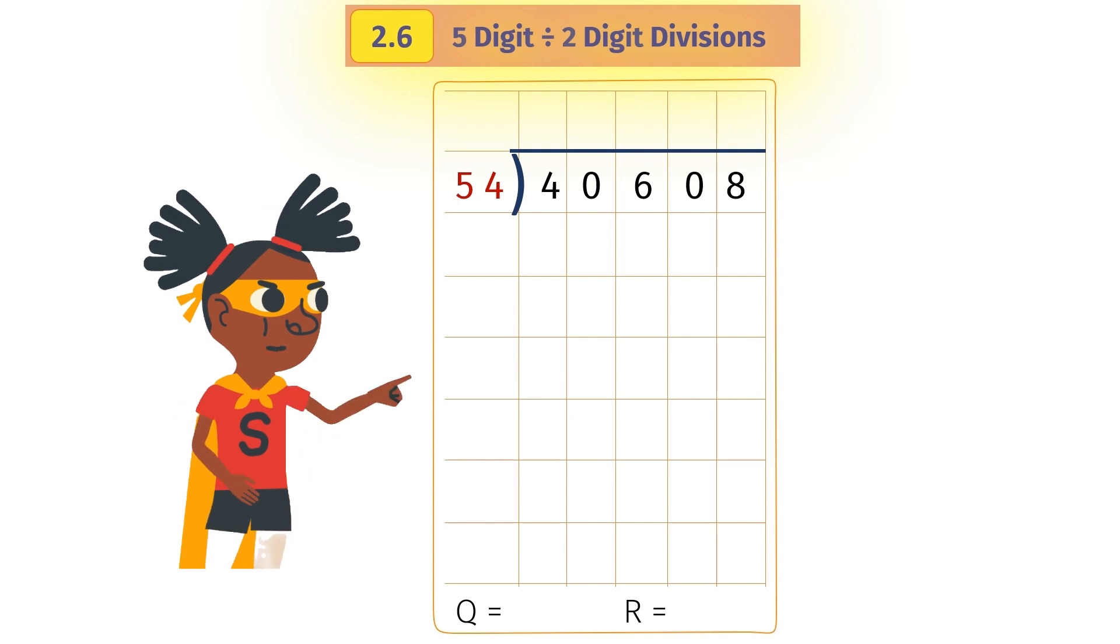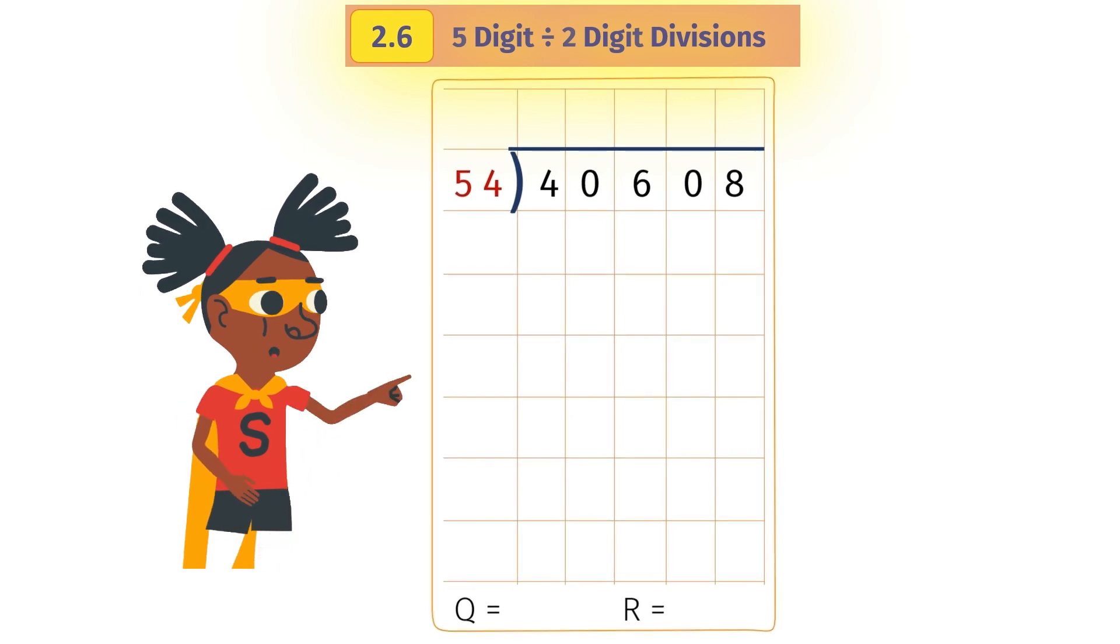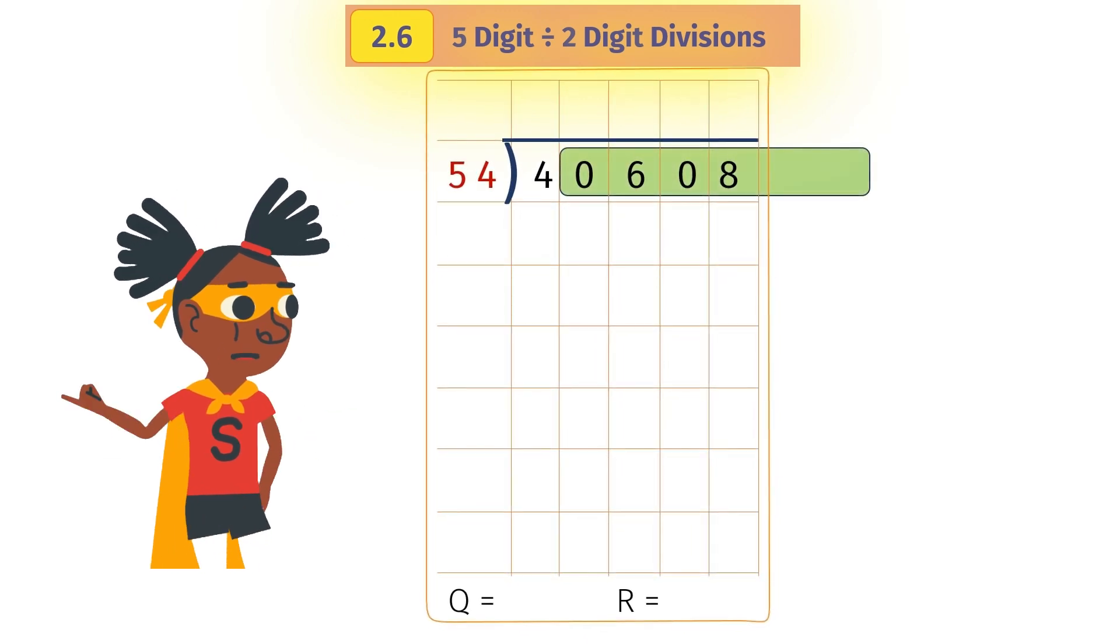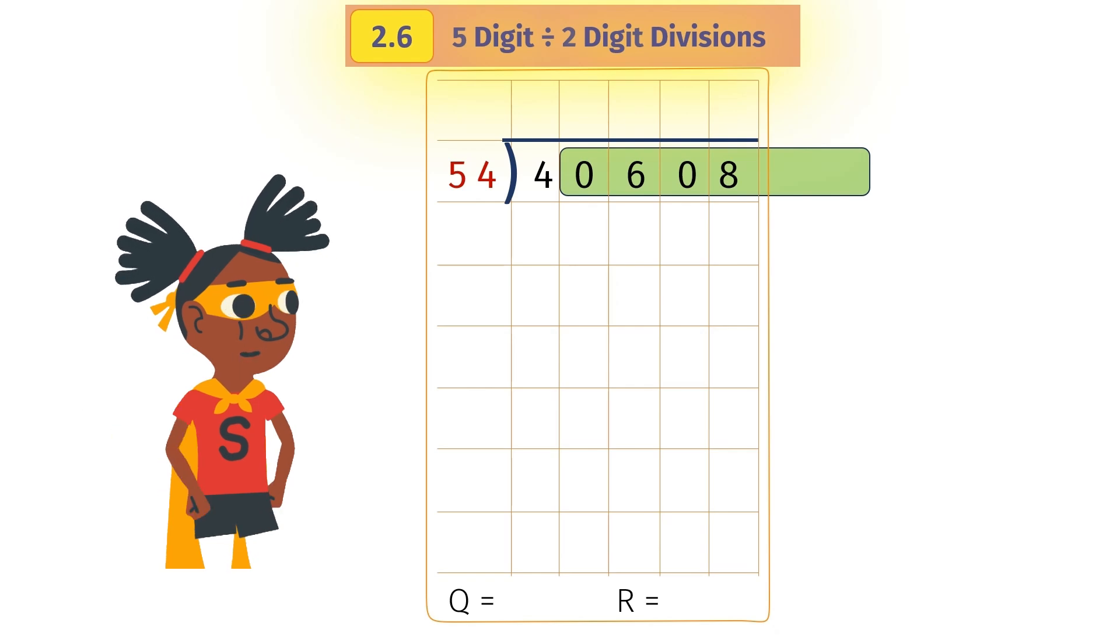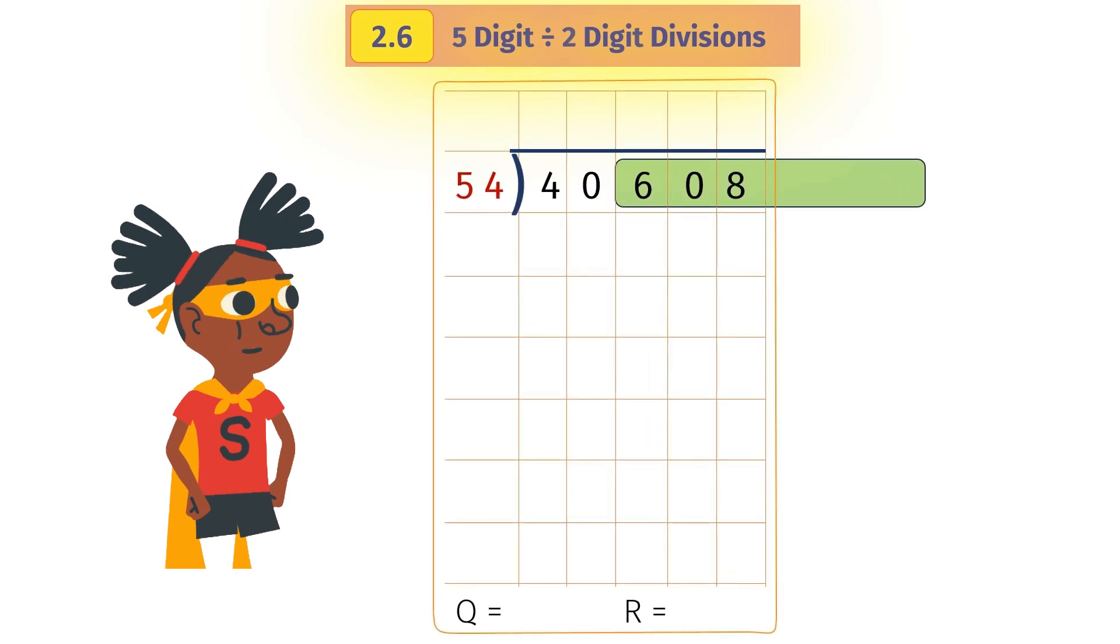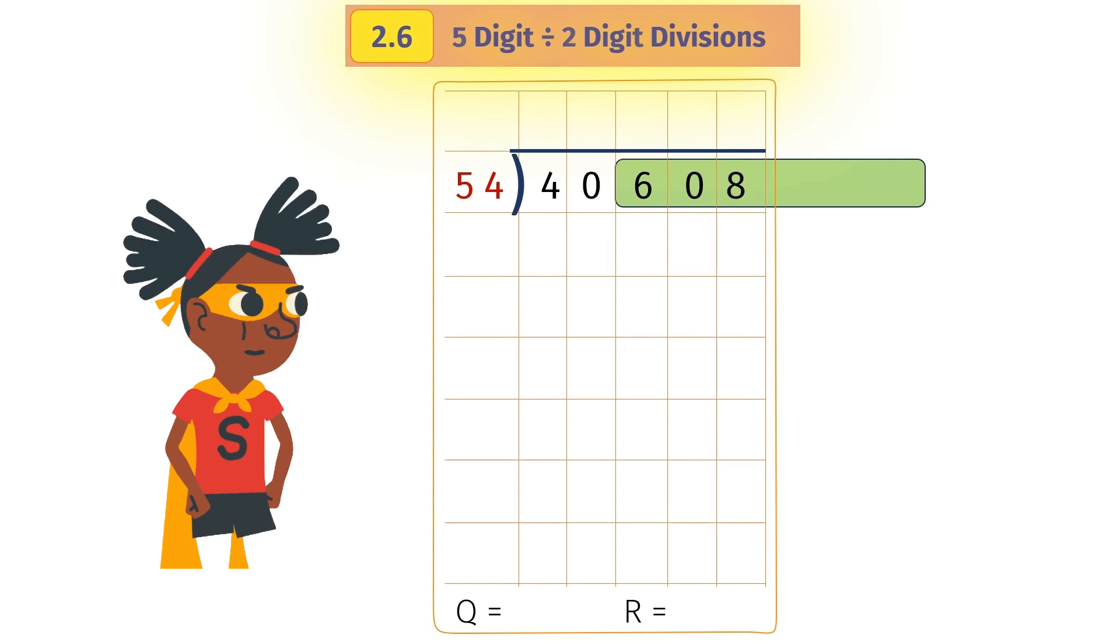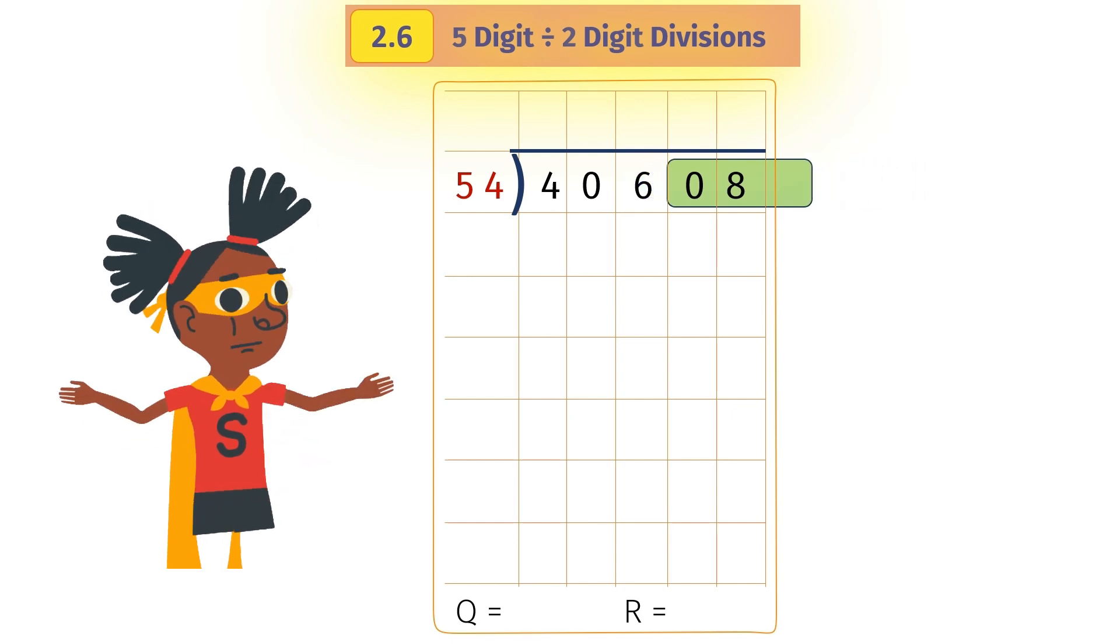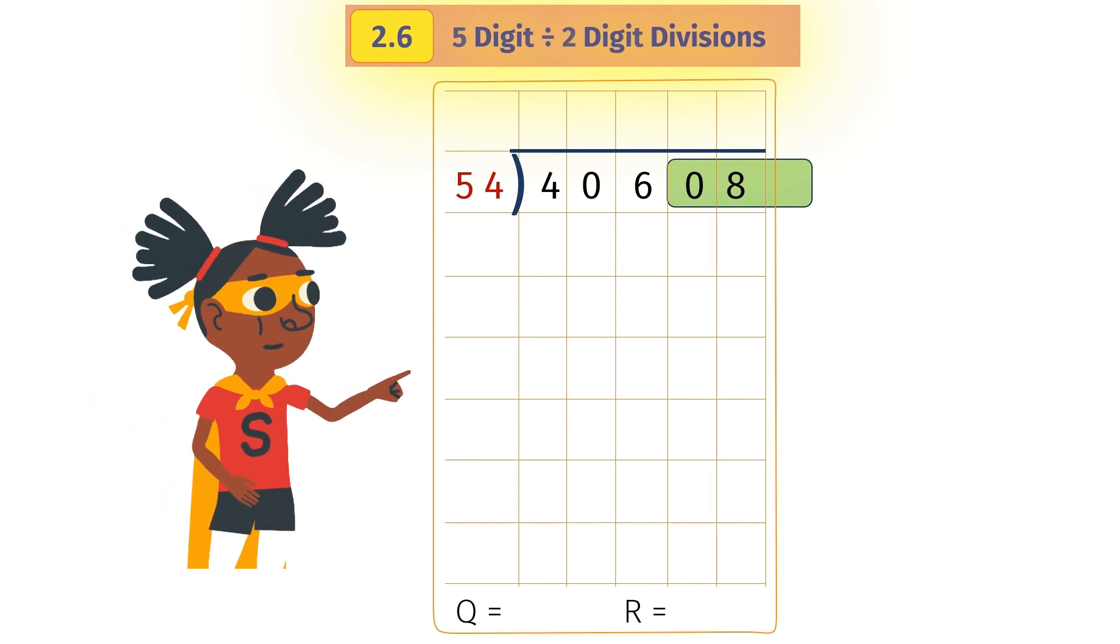In the dividend, we need a number greater than the divisor. 4 is less than 54. 40 is less than 54 as well. 406 is greater than 54. Let us start with that. So we have to divide 406 by 54.